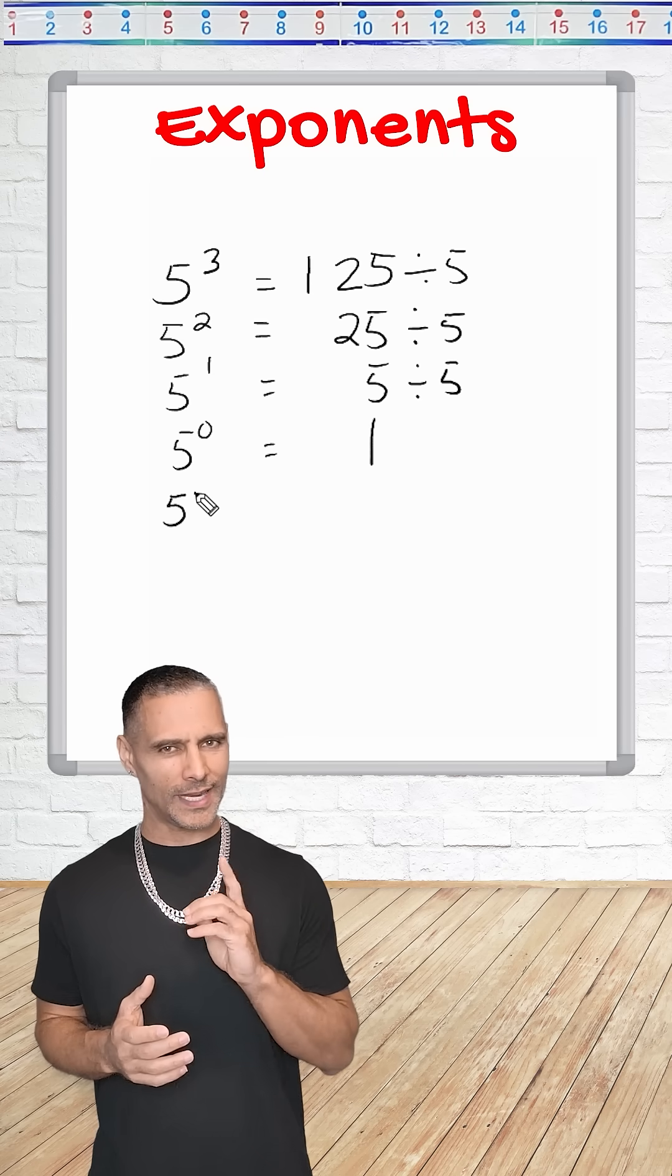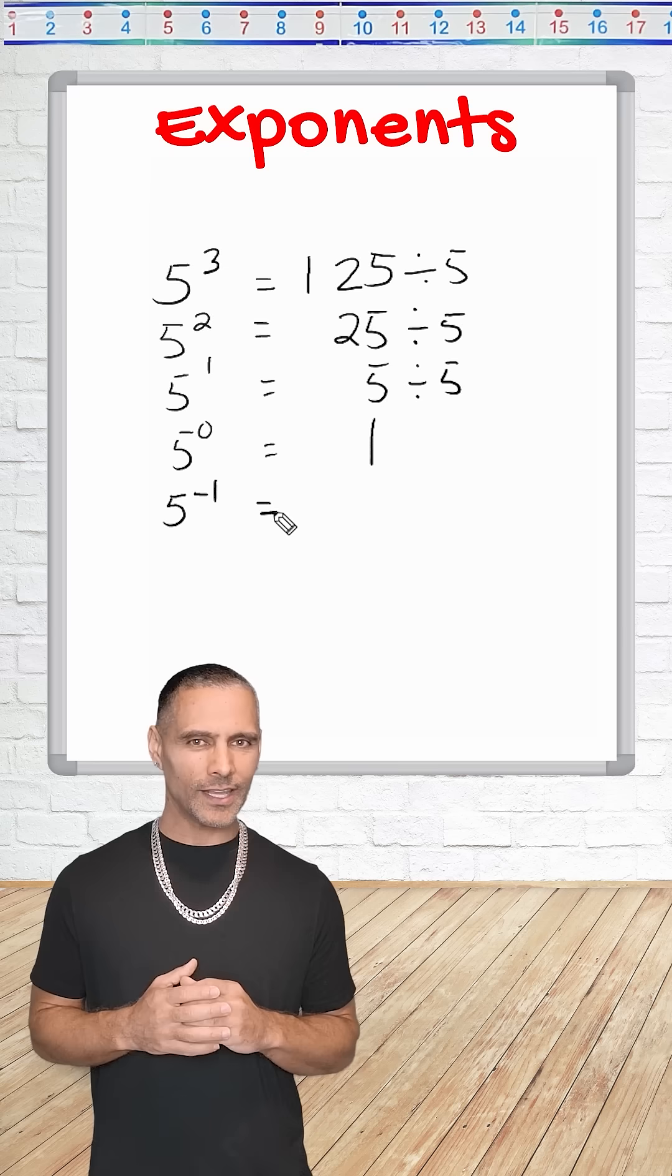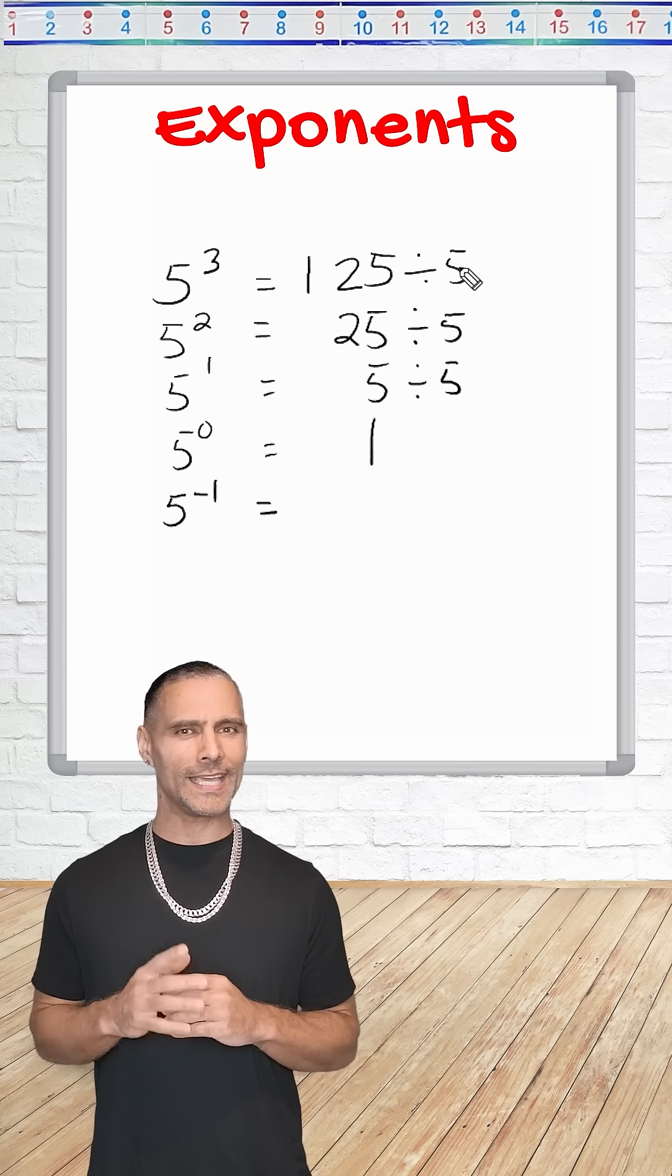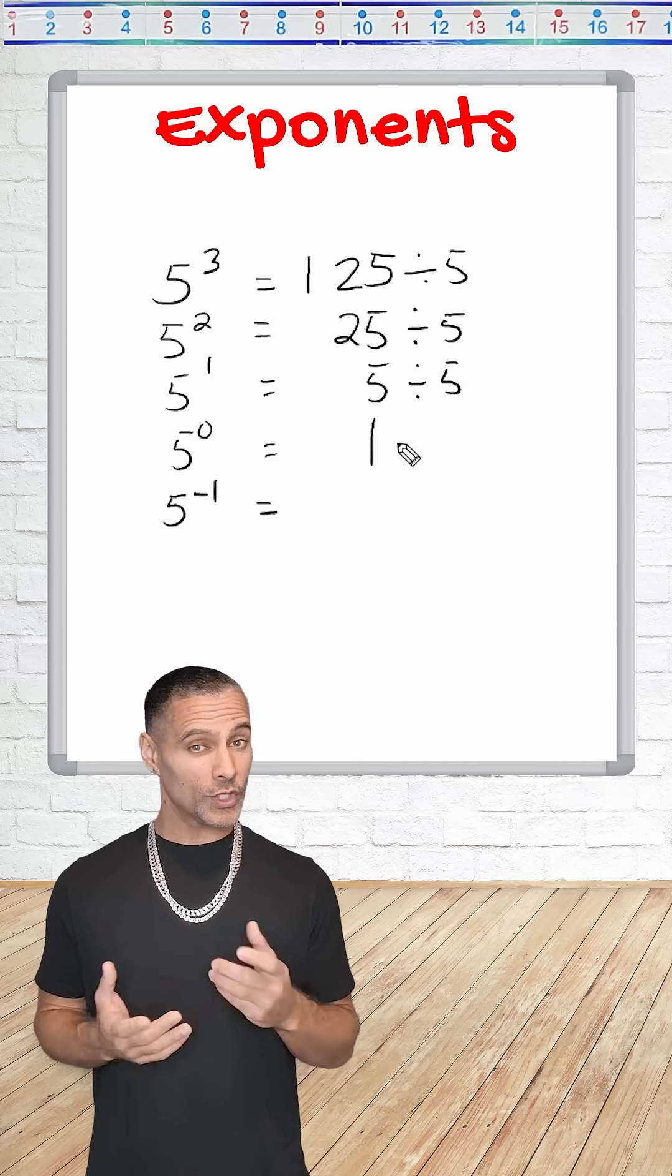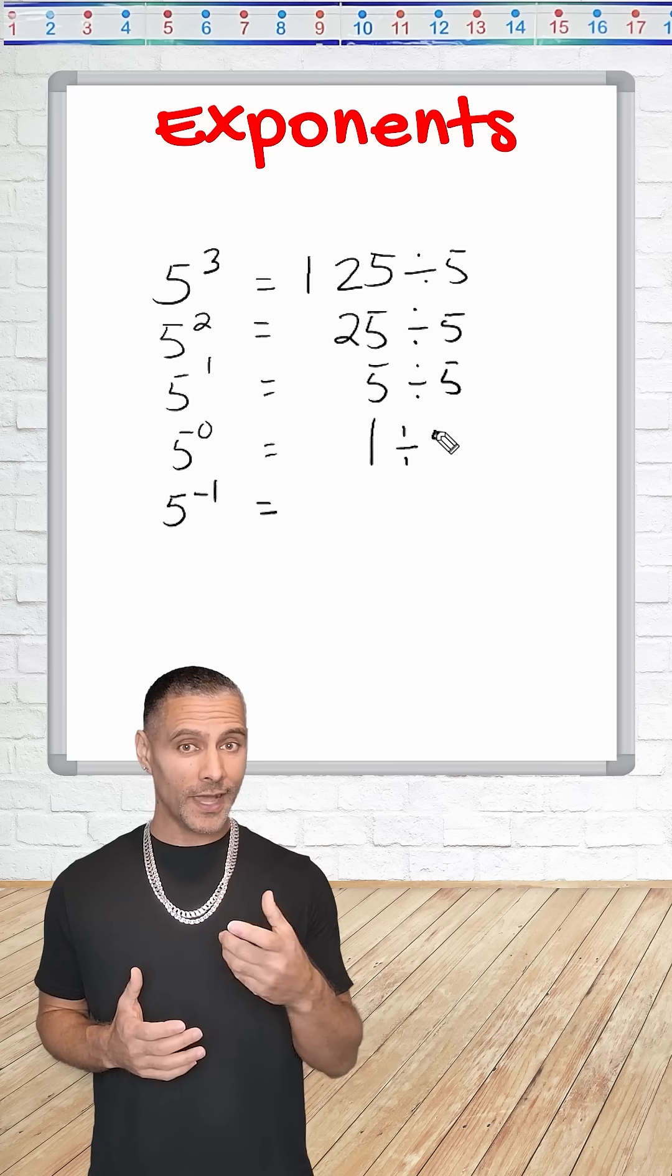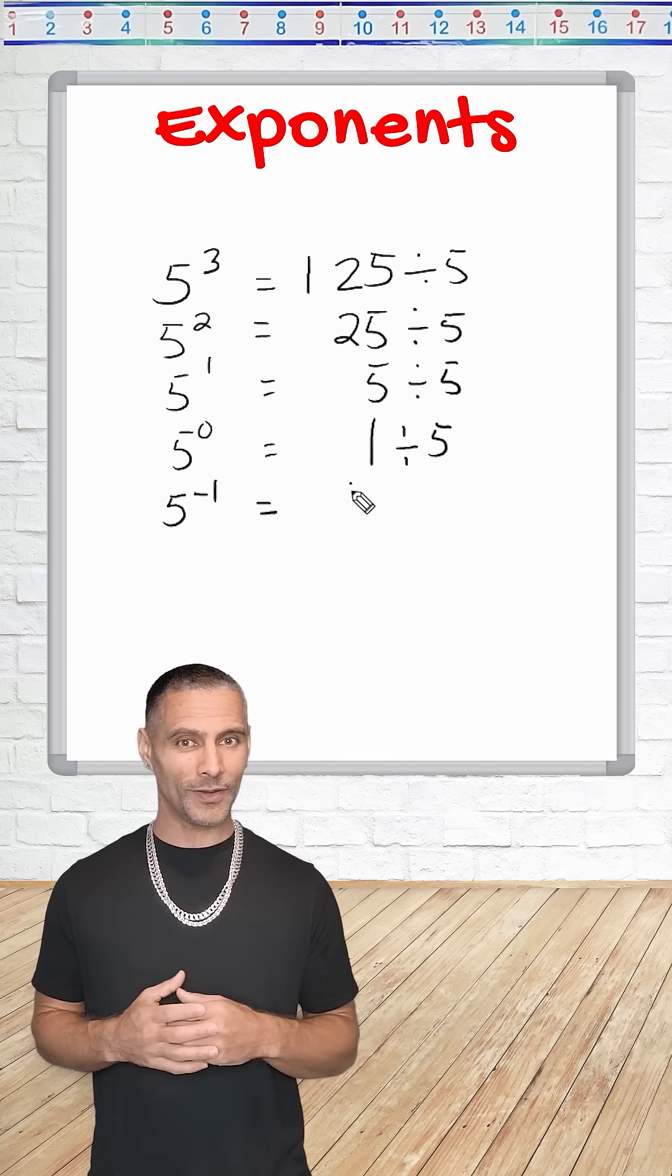Now, let us look at 5 to the negative first power. A negative exponent means repeated division, the opposite of multiplication. So we take the previous value, which was 1, and divide it by 5 to continue the pattern, which is equal to 1 fifth.